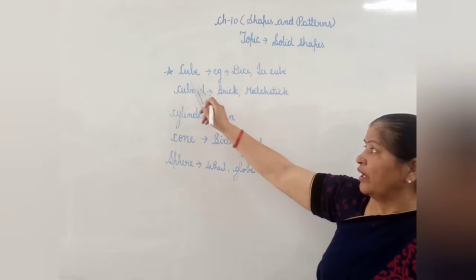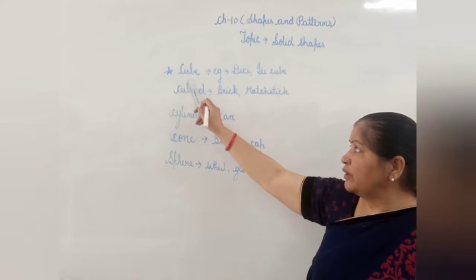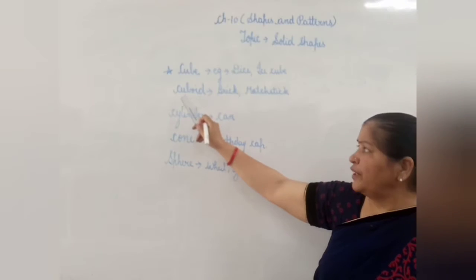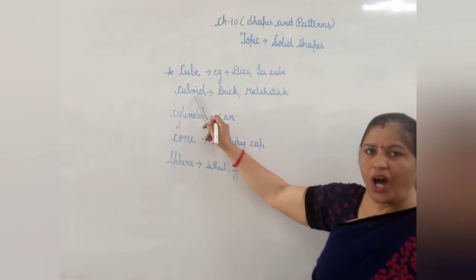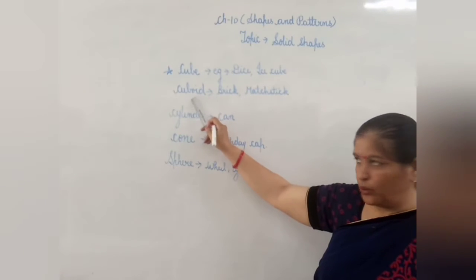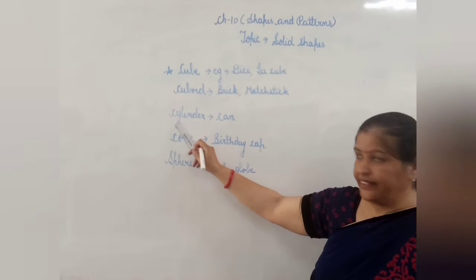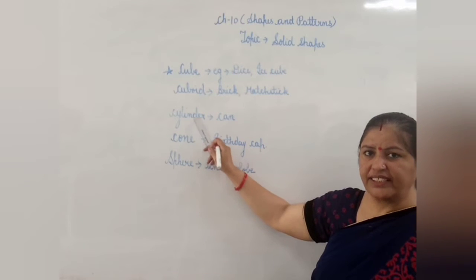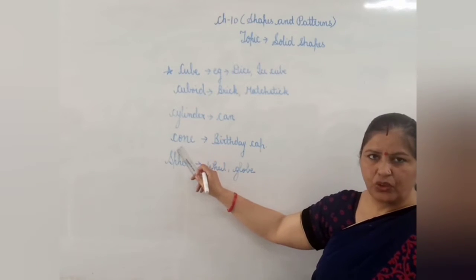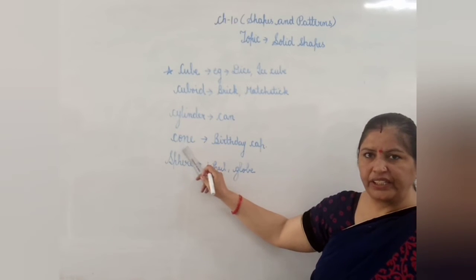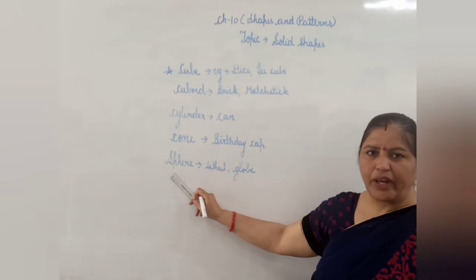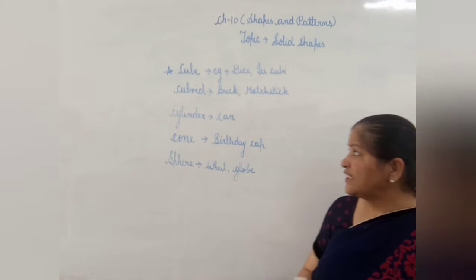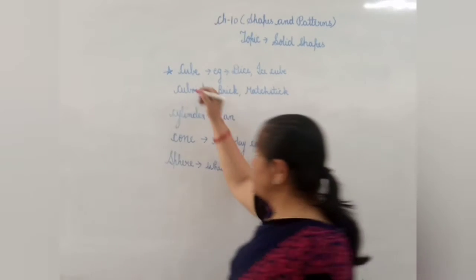These are the solid shapes. The first one is cube, C-U-B-E. Second is cuboid, C-U-B-O-I-D. Third is cylinder, C-Y-L-I-N-D-E-R. Fourth is cone, C-O-N-E. And the last one is sphere, S-P-H-E-R-E. So these are all the solid shapes.